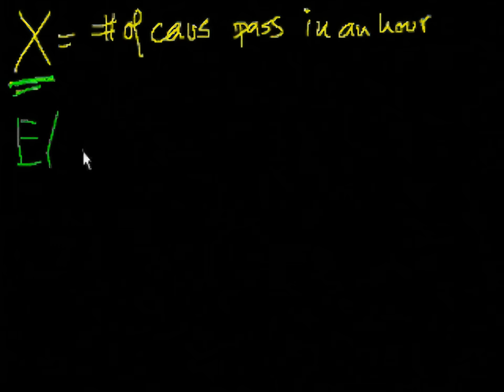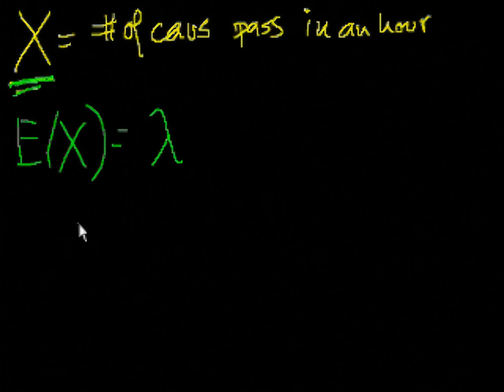And you get your best estimate of the expected value of this random variable is, I'll use the letter lambda. So this could be 9 cars per hour. You sat out there, it could be 9.3 cars per hour. You sat out there over hundreds of hours and you just counted the number of cars each hour and you average them all up. You said, on average there are 9.3 cars per hour and you feel that's a pretty good estimate. So that's what you have there. And let's see what we could do.